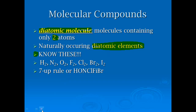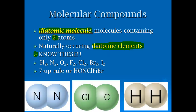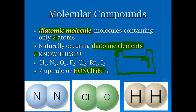There are two ways to remember them. You can remember 'Hunkle Fibber' — that's the elements' abbreviations spelled out. Or you have the 7-Up Rule: if you look at a periodic table, hydrogen is up at the top, and then the rest of them form the shape of a 7, giving you the 7-Up Rule.